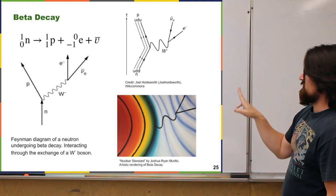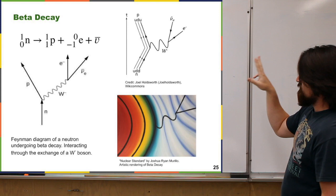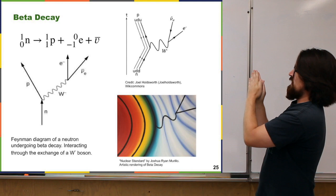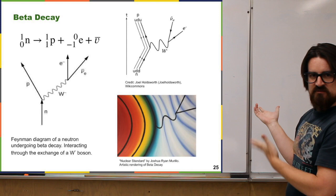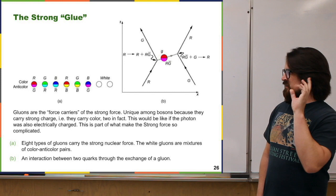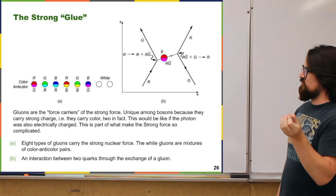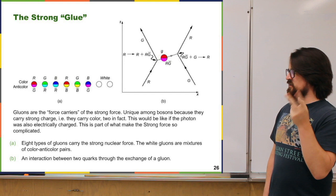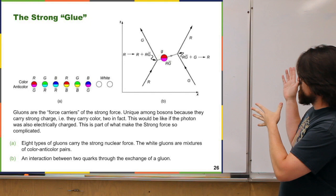At an even more fundamental level, the neutron is this combination of up, down, down quarks. What's happening is that one of the down quarks is turning into an up quark and emitting this W-minus boson, which then quickly decays into that electron and the anti-electron neutrino. And as I mentioned before, the force carriers of the strong force — the gluons — are actually charged under the strong force. So in our picture, they also carry color, like the quarks do. It turns out each gluon carries two colors — a color and an anti-color. So we can draw Feynman diagrams for the strong interactions too.